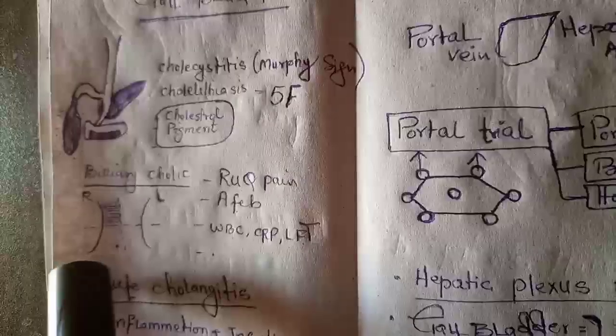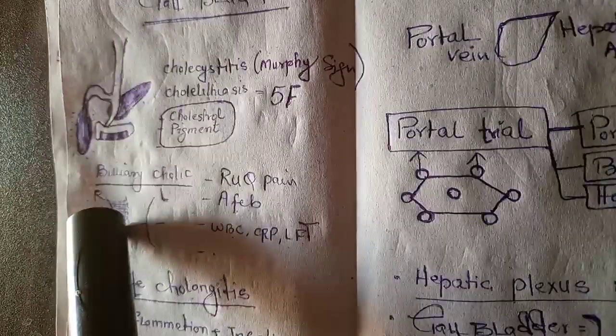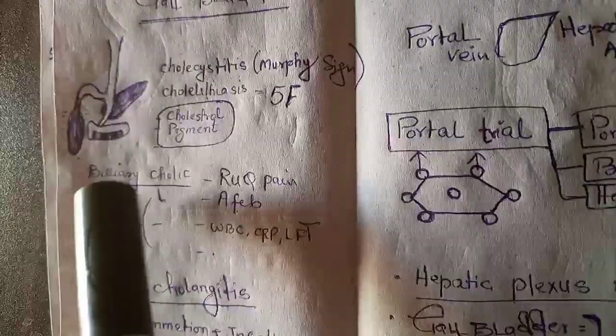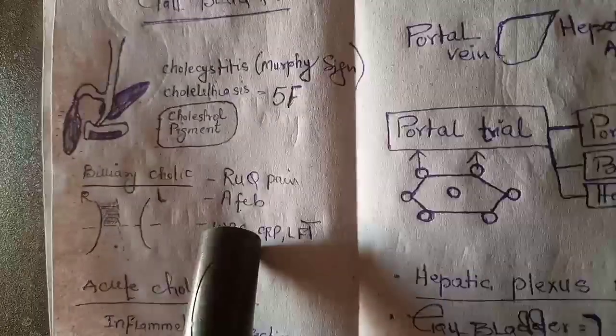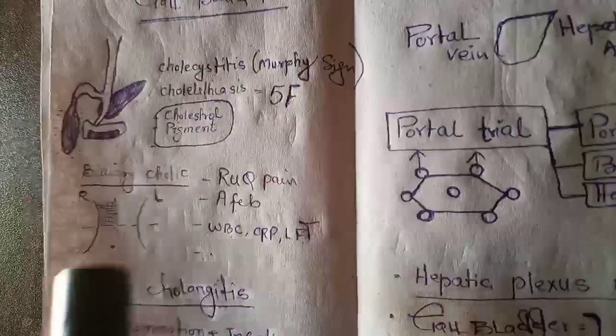Biliary colic is right upper quadrant pain. Let's suppose this is the abdomen and there is right upper quadrant pain here felt because of biliary colic. Patient will be afebrile, WBC count will be elevated, CRP and LFTs will be deranged.